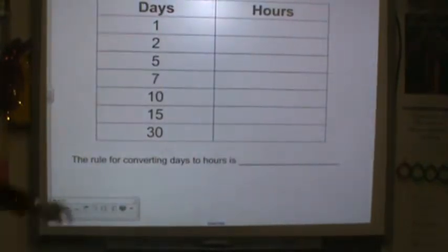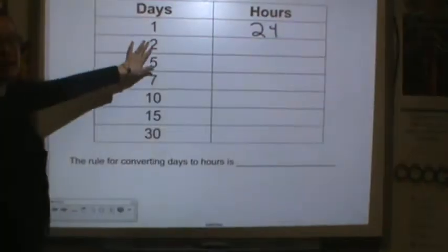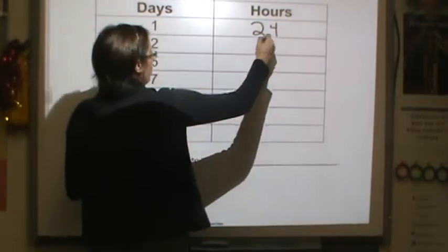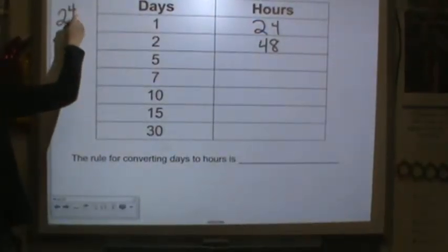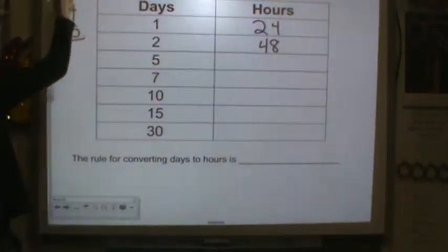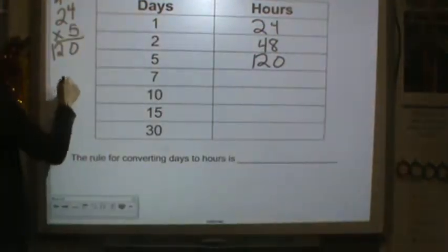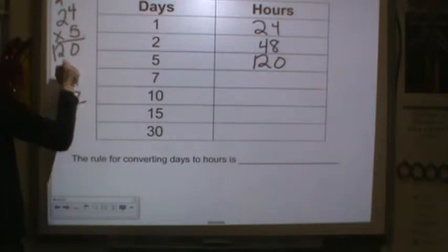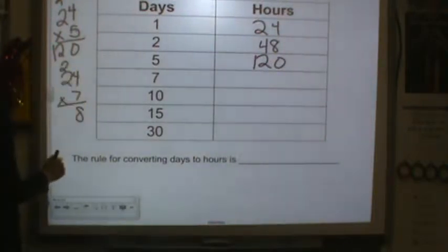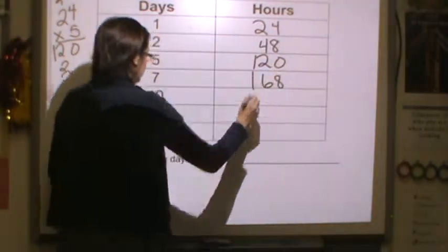Days to hours. One day has 24 hours. Two days, you'd have to do two groups of 24, you get 48. Five days, I don't know 24 times 5 off the top of my head. 5 times 4 is 20, 2 times 5 is 10 plus 2 is 12, so you have 120 hours. 7 days, I don't know 7 times 24 off the top of my head. 7 times 4 is 28, 2 times 7 is 14 plus 2 is 16. 168 hours.